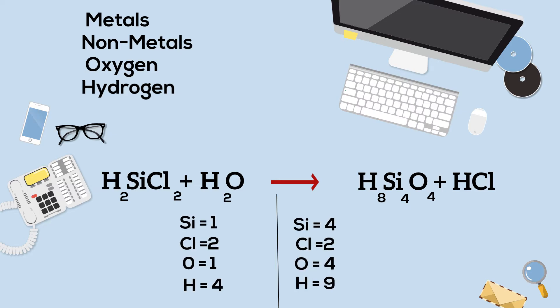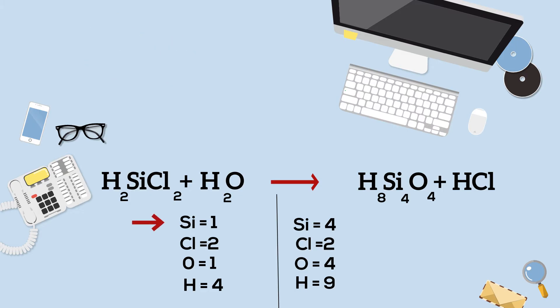On the reactant side, the left side, I have one silicon, I have two chlorines, I have one oxygen and four hydrogens. And then on the product side,